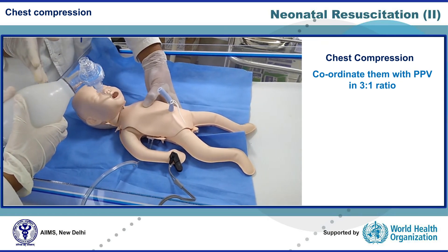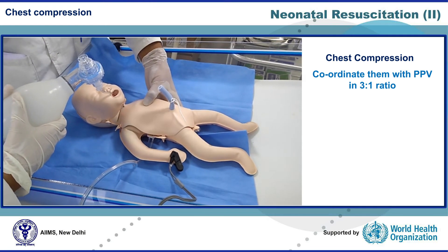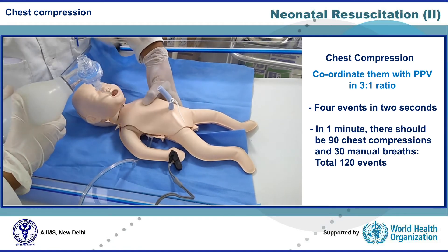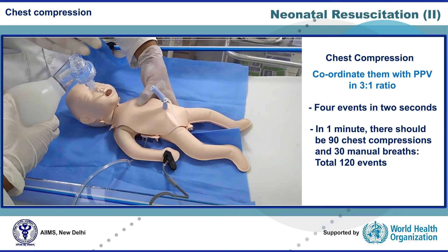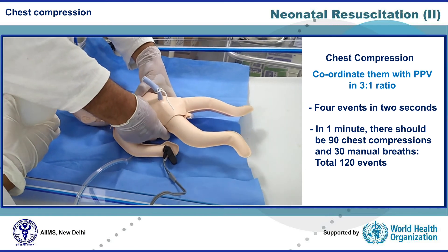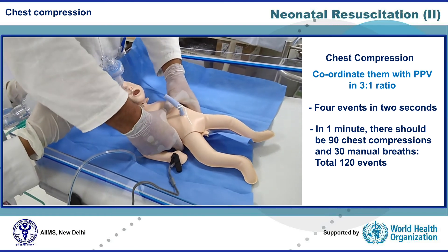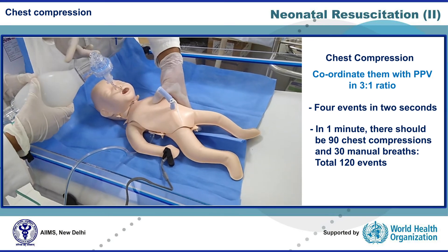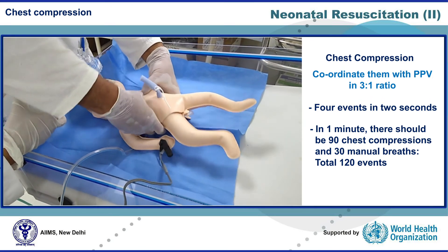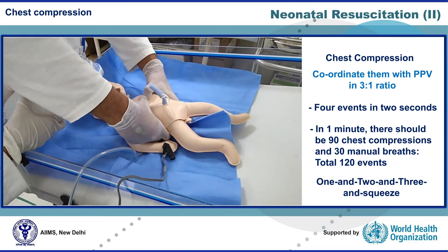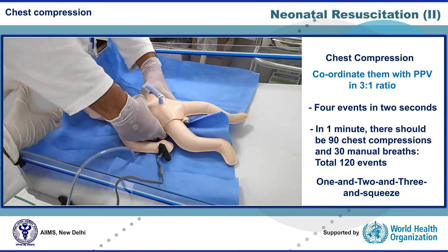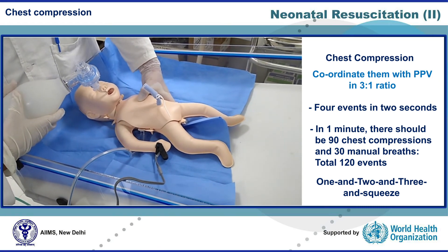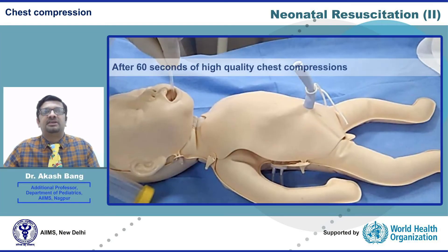For every three chest compressions, one ventilation is needed — a 3:1 ratio. These four events should finish in two seconds, so that in one full minute we achieve 90 compressions and 30 ventilations. The mantra used is: 'one-and-two-and-three-and-squeeze-and' — on 'one,' 'two,' and 'three' we compress and release, and on 'squeeze' we give ventilation. This coordinated compression and ventilation should be done for one full minute before checking the heart rate.